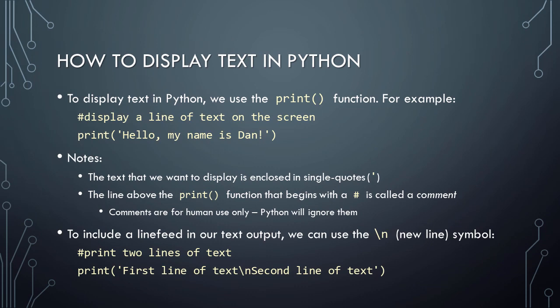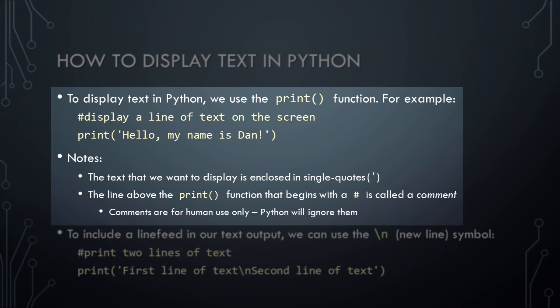Let's get started by learning how to display text in Python. To display a line of text in Python, we use the print function. The text that we want to display is passed into the print function inside its parentheses and is enclosed in single quotes. Generally, literal strings of text in Python should always be enclosed in single quotes. This is how Python knows that we're referring to a text string rather than to other text-based programming commands.